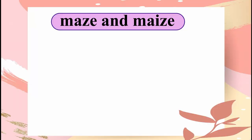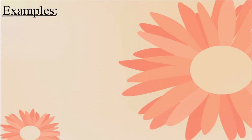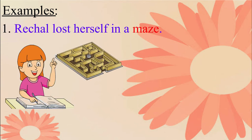The next set of words are 'maze' and 'maize.' These words are pronounced in a similar manner but have completely different meanings. M-A-Z-E, 'maze,' means a network. And M-A-I-Z-E, 'maize,' is an Indian crop. Please repeat these sentences after me: Rachel lost herself in a maze.